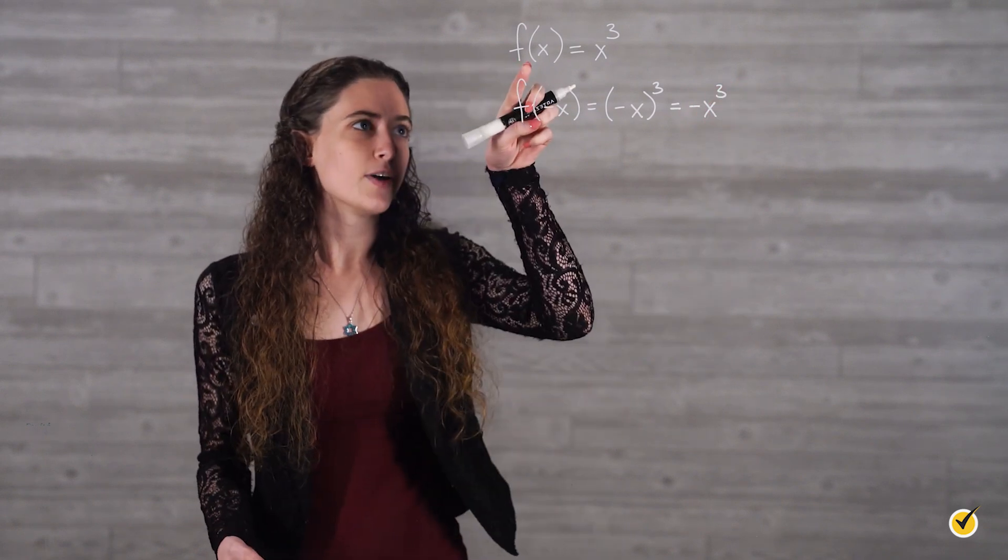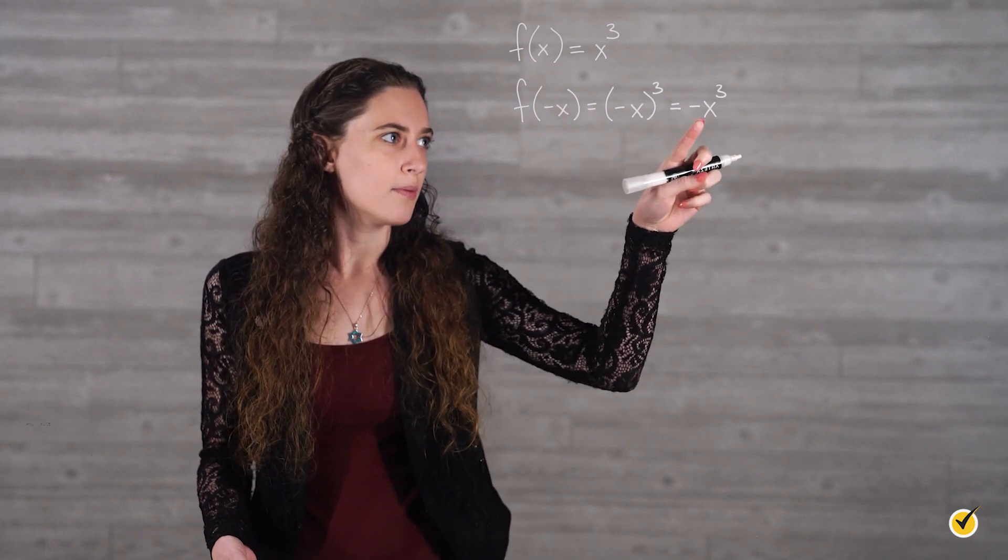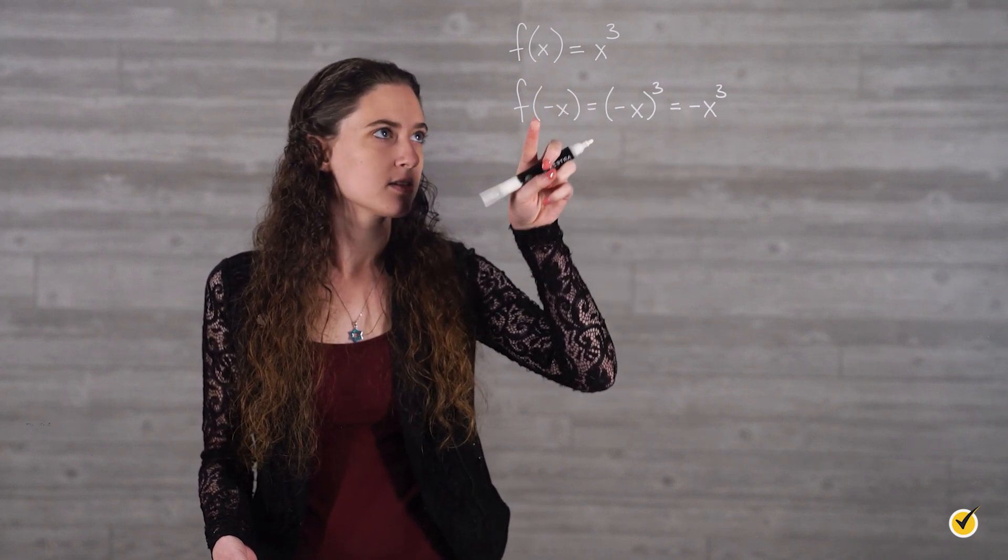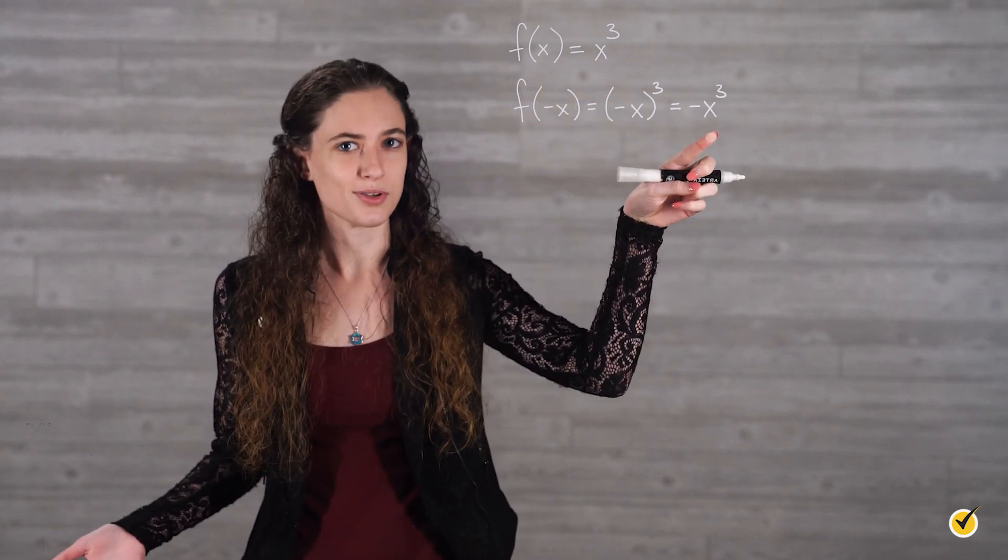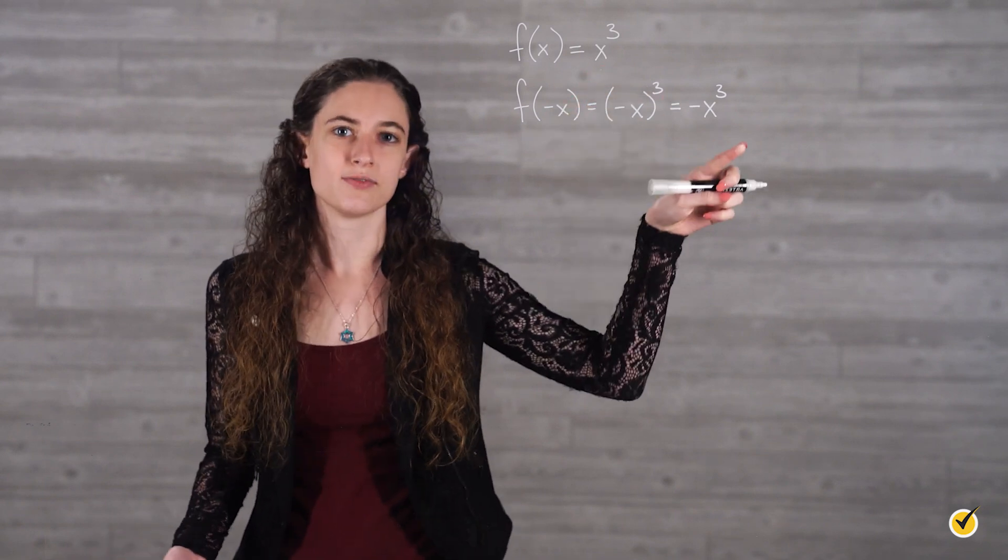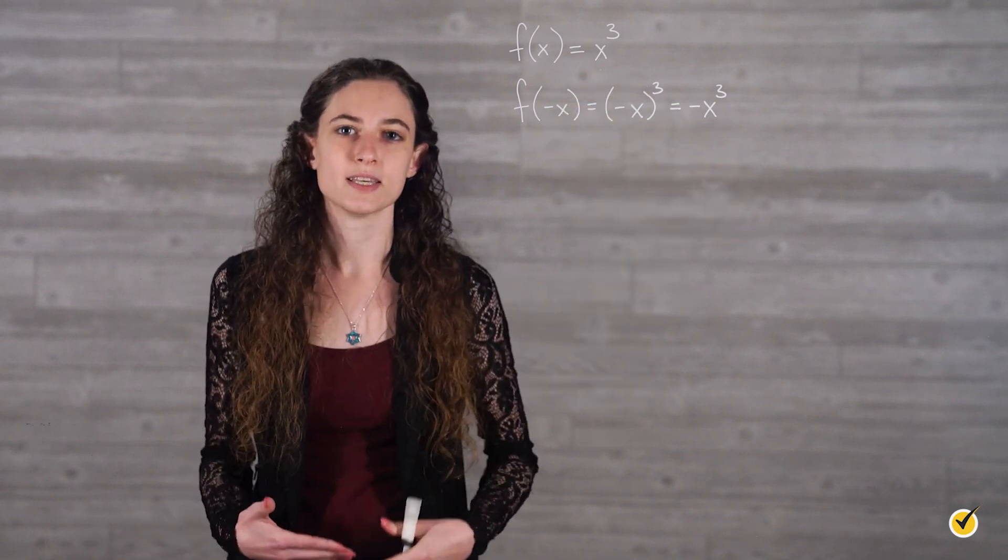So if you notice, f(-x) is the opposite of f(x). Each term, which in this case we only have one, is changed from positive to negative. So that means that this function is odd.